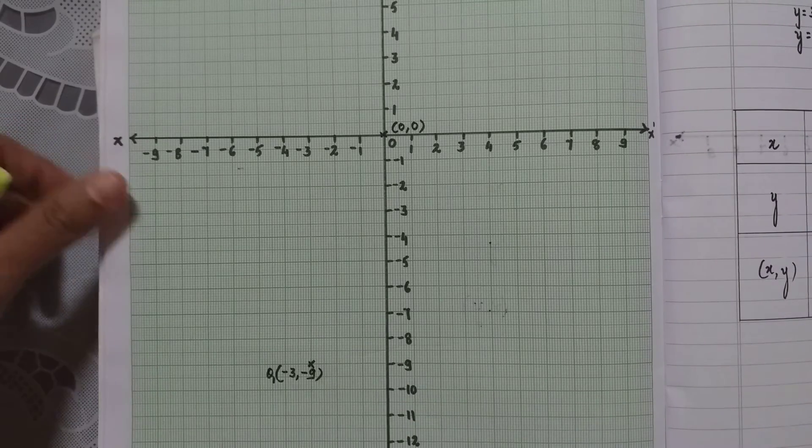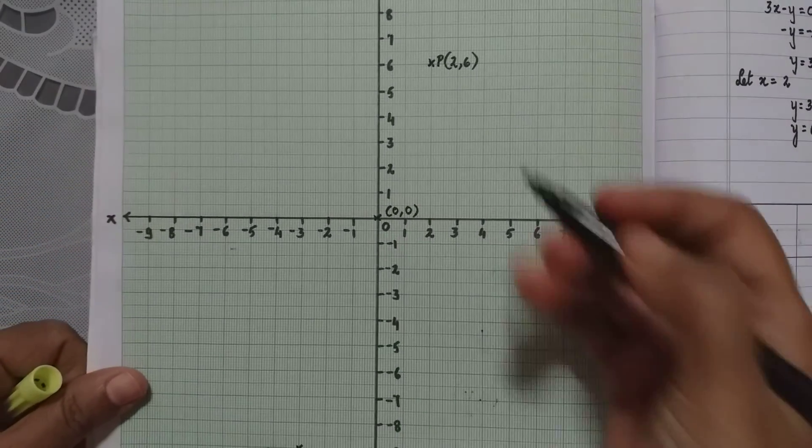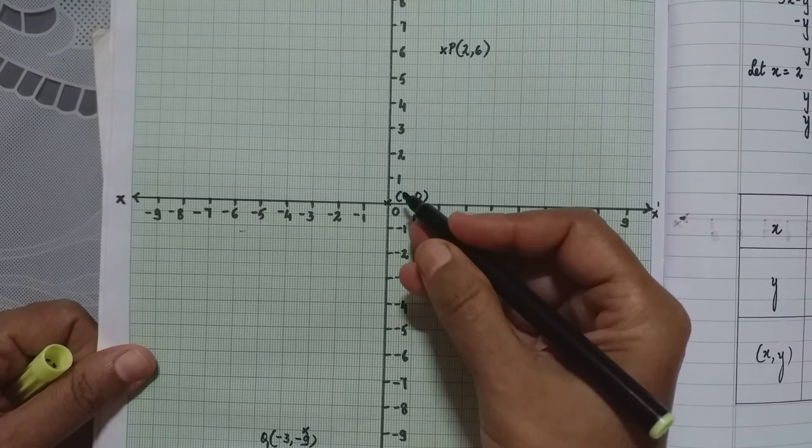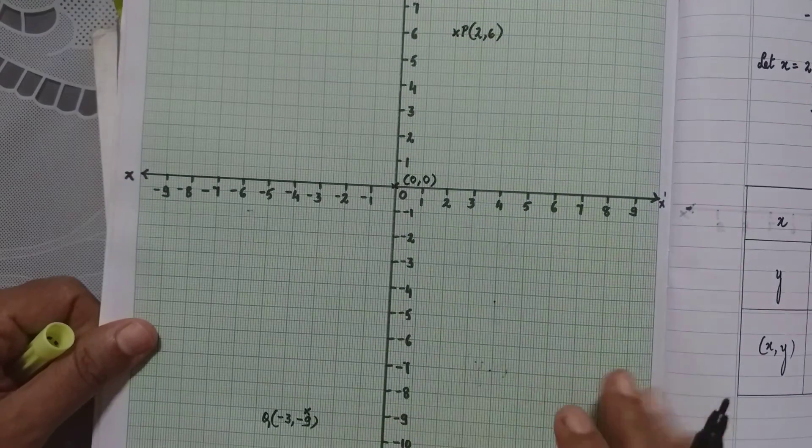All my three coordinates are marked here. I have P, I have here O which is 0, 0, and Q.